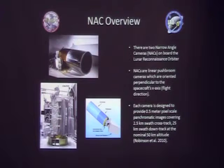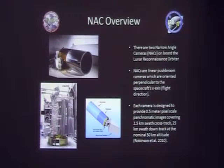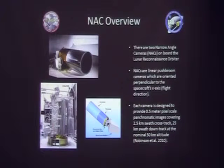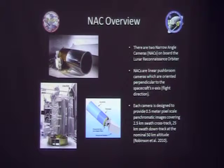Here we have the NAC camera, which is a linear push broom camera. Here's a better view of it on the spacecraft — you can see the NACs oriented on the spacecraft. Each camera was designed to have about a half meter per pixel resolution, two and a half kilometers across track and 25 kilometers down track. So it's high resolution, low coverage.